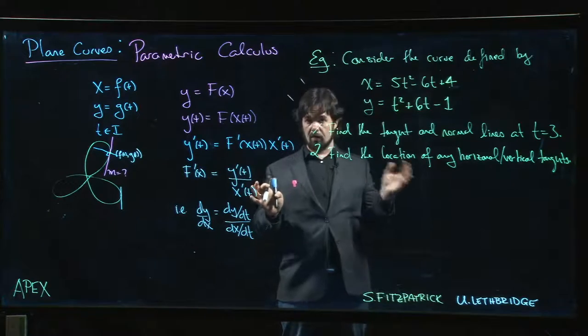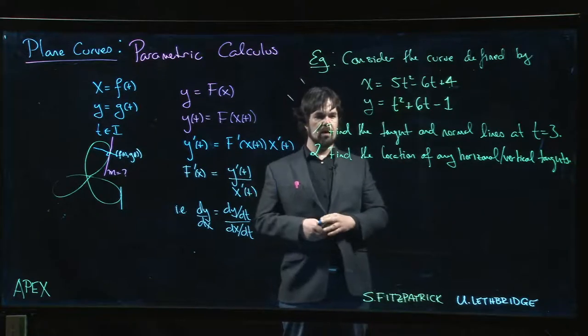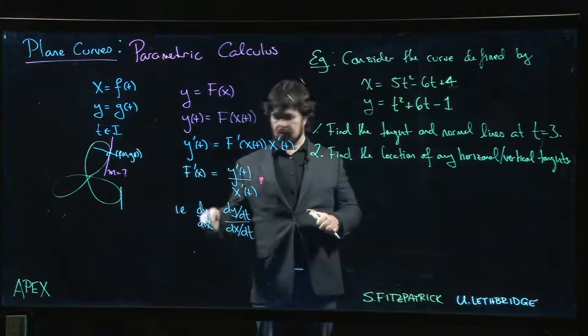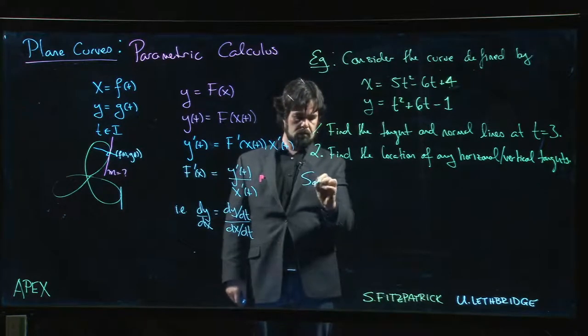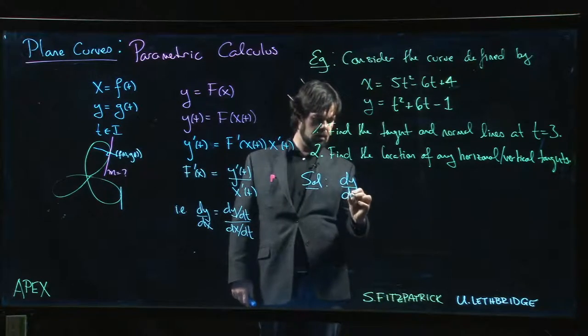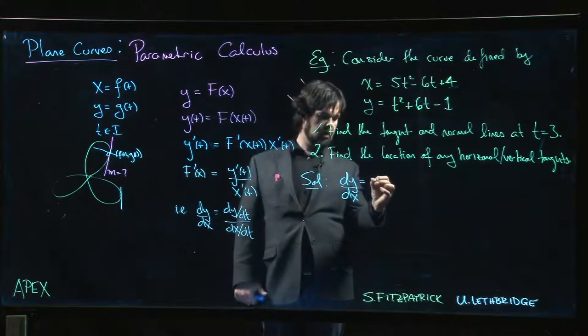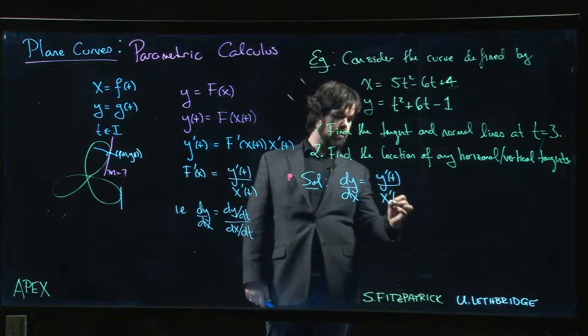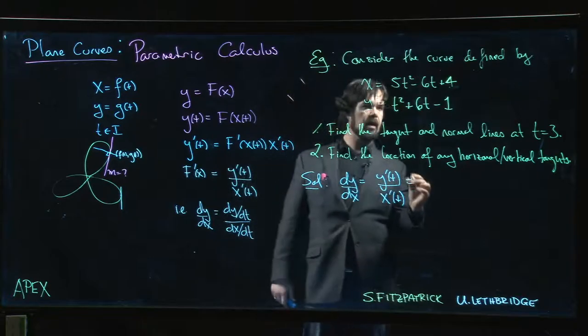Then we'll see if we can find any places where we have horizontal or vertical tangents. Okay, so to start out we need dy/dx. dy/dx is equal to y prime of t divided by x prime of t.